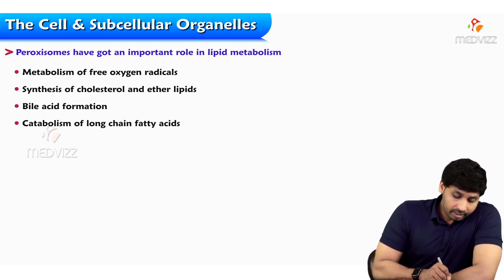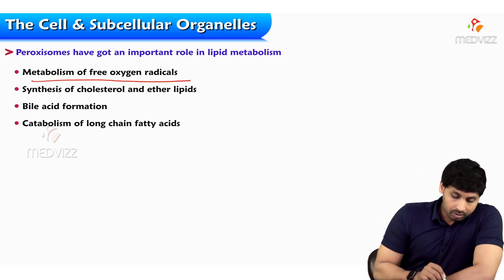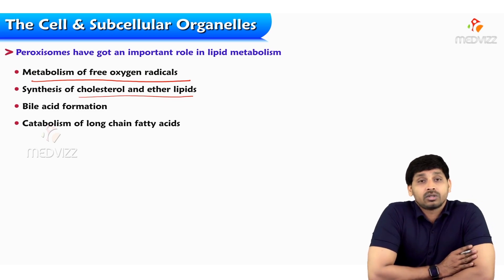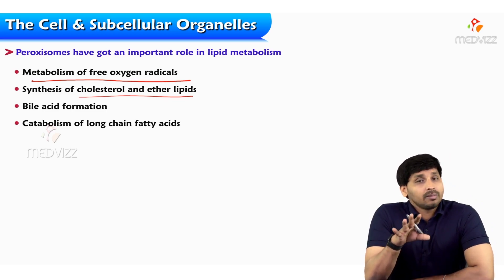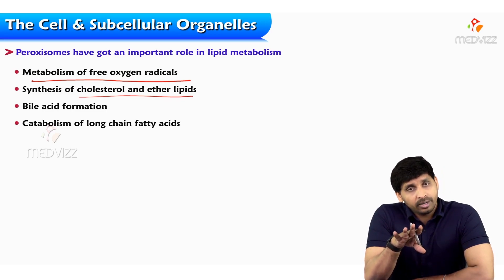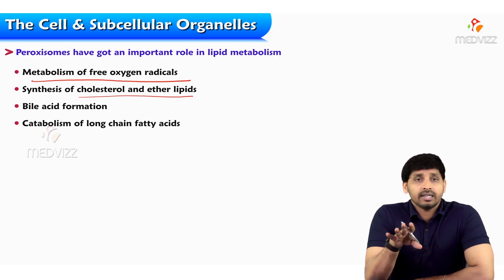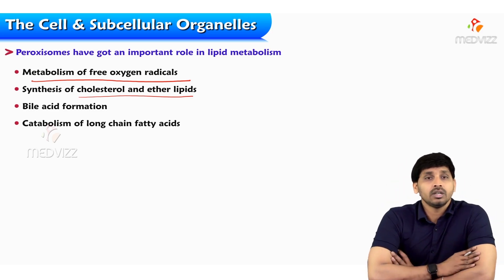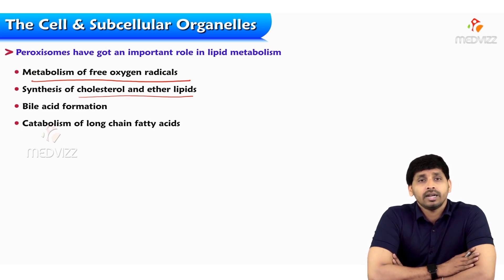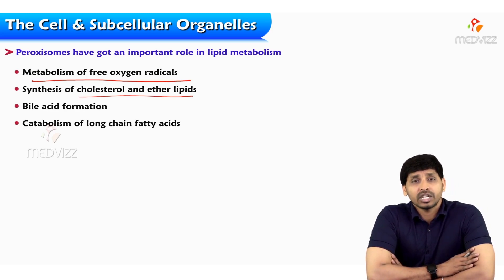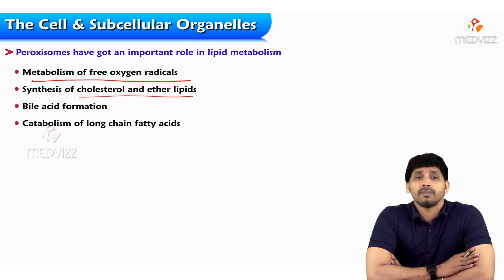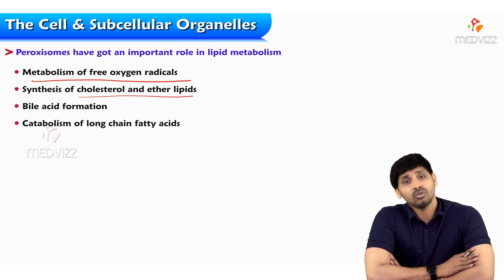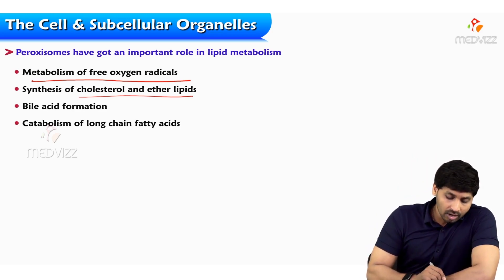Peroxisomes are involved in metabolism of free oxygen radicals and are used in synthesis of cholesterol and ether lipids. Cholesterol synthesis occurs in the liver, specifically inside hepatic cells where peroxisomes are present. Peroxisomes also carry out bile acid formation. Bile acids are required for emulsification of fat — lipid-rich food requires bile acids for emulsification, and without emulsification it is difficult to digest lipid food.